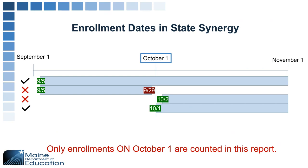Enrollment dates in Synergy need to overlap October 1 in order to count on this report. For example, if an enrollment starts on 9-5 and is open with no end date over October 1, it will count for subsidy. If a student is exited on 9-29 and does not have an enrollment starting back up on the 1st, they are not going to count. Similarly, if an enrollment starts on 10-2, it will not count. You can backdate to 10-1, and if a student is enrolled over the weekend, please reach out to the other district to determine who should get the subsidy count.